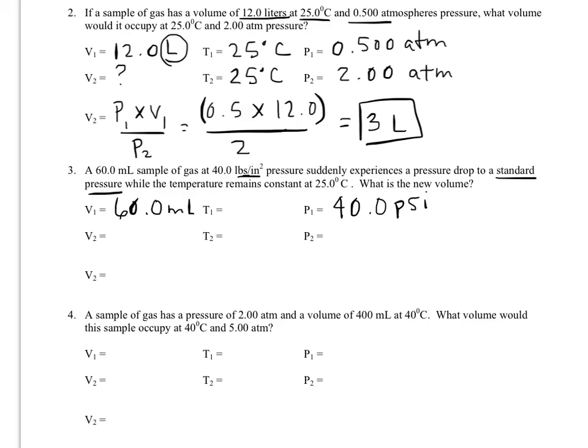Suddenly experiences a pressure drop to standard pressure. So we need to go back to our gas laws cheat sheet or worksheet number one if we don't remember what standard pressure is. Standard pressure can either be 1 atmosphere, it can be 760 torr, or 14.7 psi.